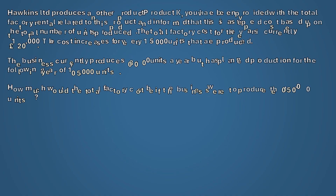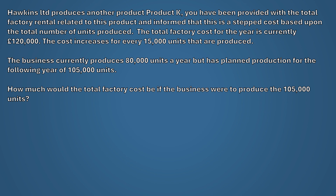Hawkins Limited produces another product, Product K. You've been provided with the total factory rental related to this product and informed that this is a stepped cost based upon the total number of units produced. The total factory cost for this year is currently £120,000 and the cost increases for every 15,000 units produced. The business currently produces 80,000 units a year but has planned production for the following year of 105,000 units. How much would the total factory cost be if the business were to produce 105,000 units?